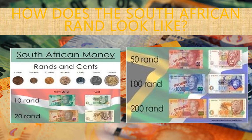How does the South African Rand look like? As you can see in the picture, for the coins: 5 cents, 10 cents, 20 cents, 50 cents, 1 Rand, 2 Rand, 5 Rand.